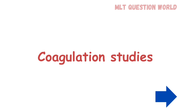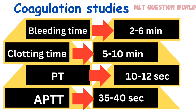Next is coagulation studies, which include BT, CT, PT, APTT, and INR. Normal bleeding time is 2 to 6 minutes. Clotting time is 5 to 10 minutes. Prothrombin time is 10 to 12 seconds. Activated partial thromboplastin time (APTT) is 35 to 40 seconds. INR (international normalized ratio) is less than 1.